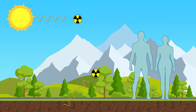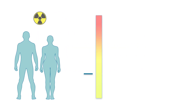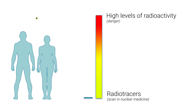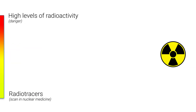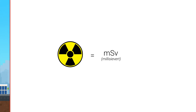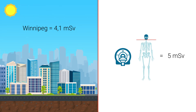Thus, every person receives a certain amount of natural radioactivity each year. Although it is true that radioactivity is cumulative and that it can be harmful or even deadly at very high doses, in nuclear medicine we use radio tracers. The amount of radioactivity used is therefore extremely low and not alarming. The unit of measurement used to measure radiation is called millisievert. For example, a person living in Winnipeg annually receives an average of 4.1 millisieverts, whereas an examination of bone structures in nuclear medicine generates an average of 5 millisieverts.